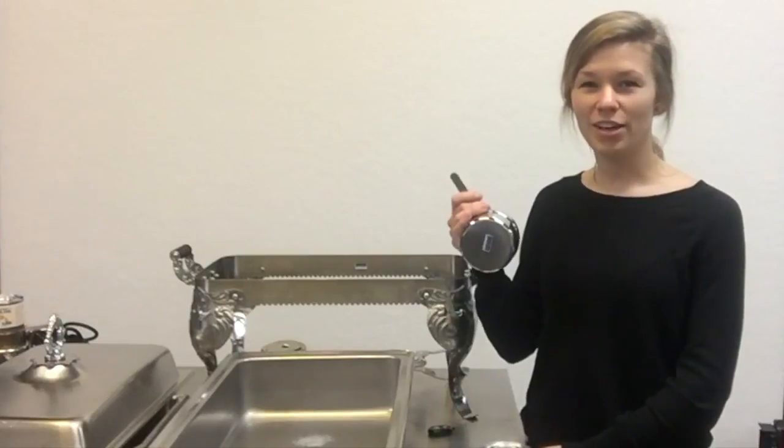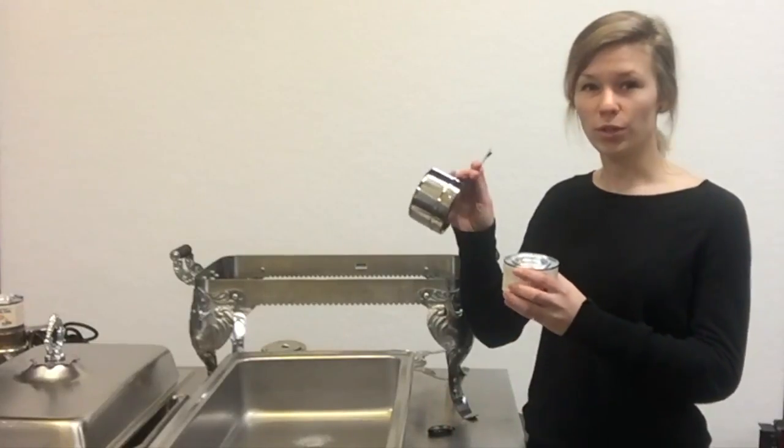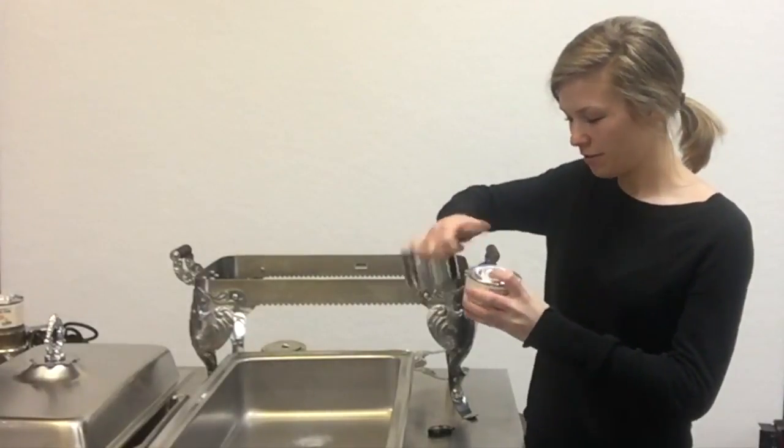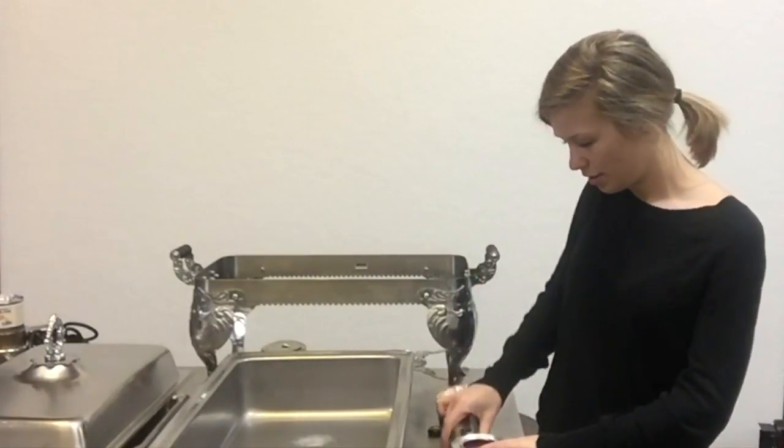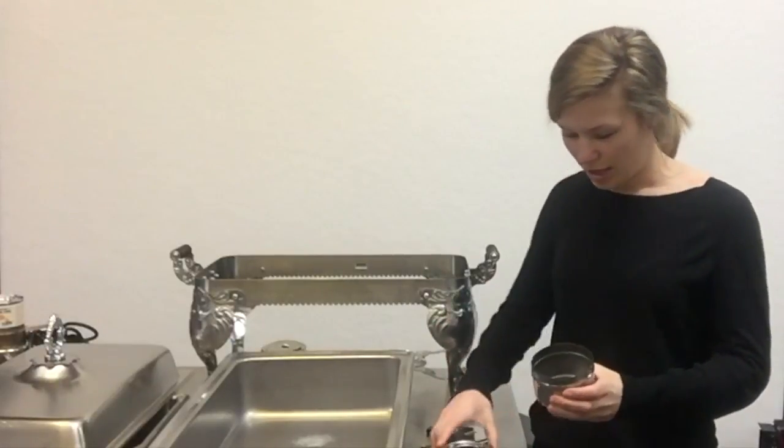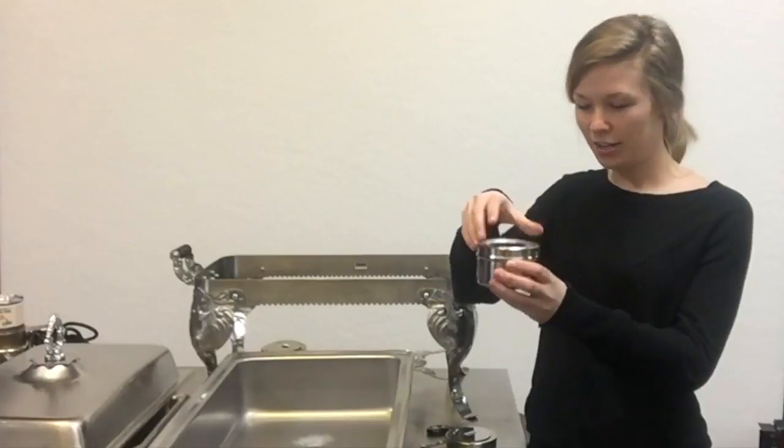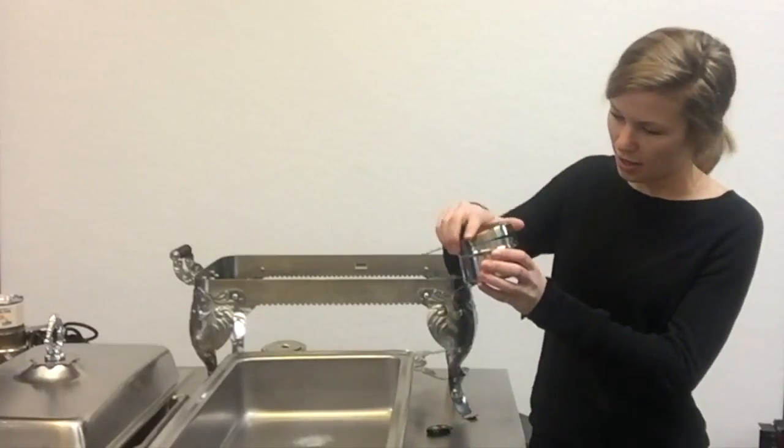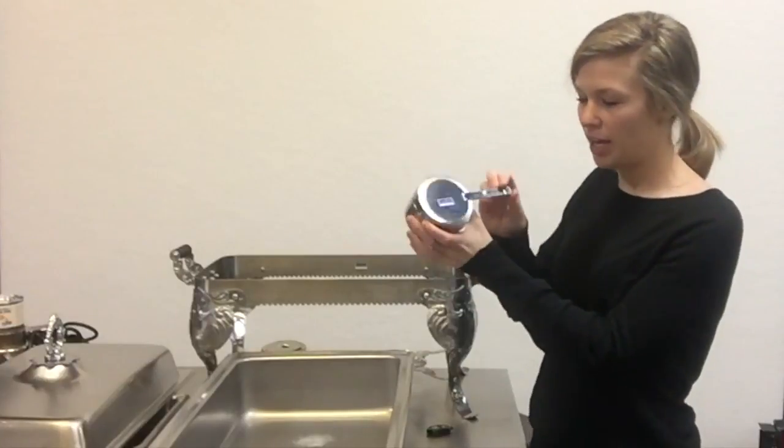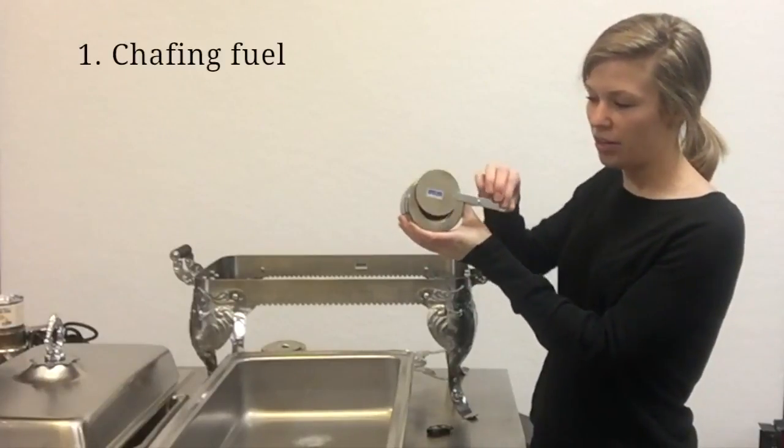You can use the handle of your chafing fuel holder to open up the chafing fuel. You can pop it right in, close it up, and this is how you regulate your heat.